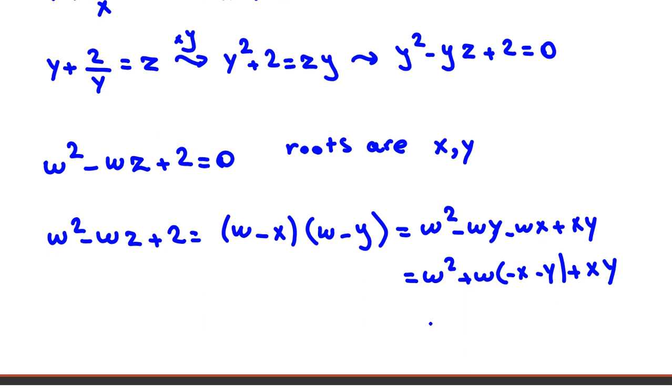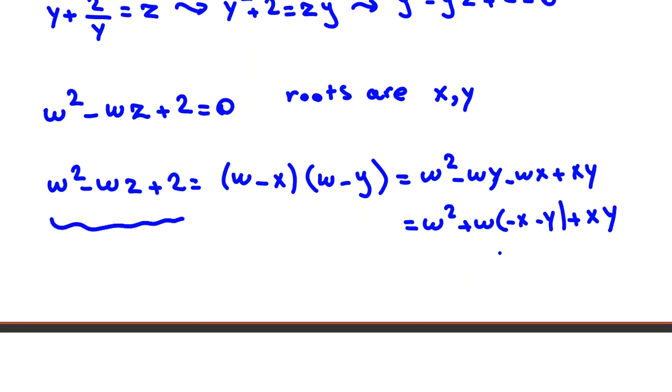If you consider these two polynomials, we want to find xy. xy is constant term here, is constant term here, equal to 2. So the answer is equal to 2.